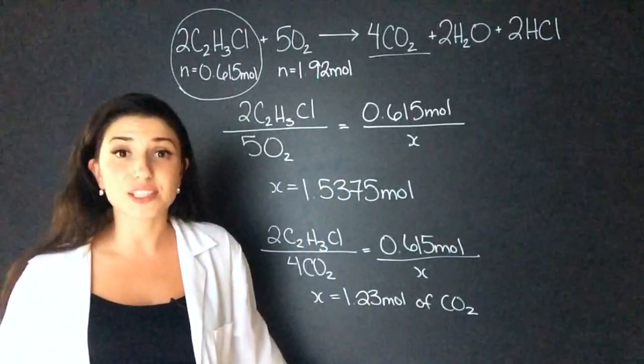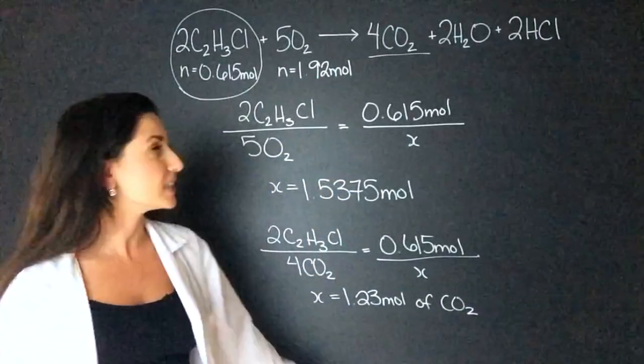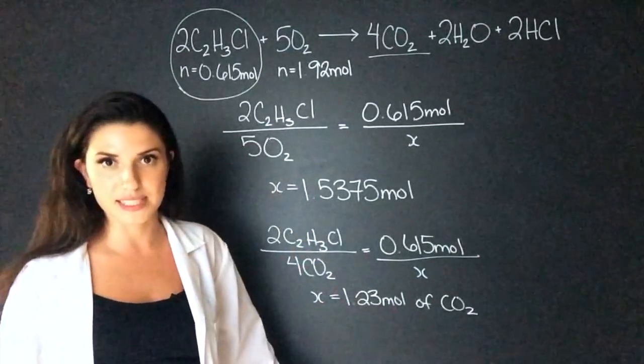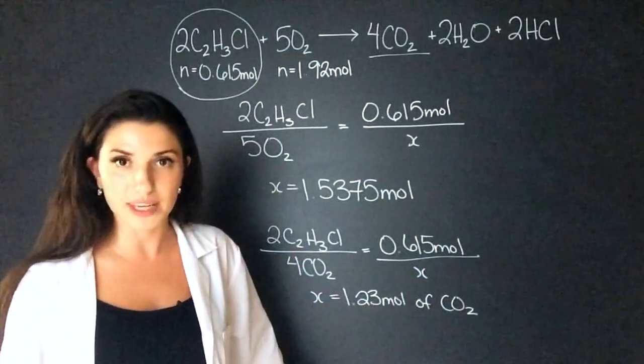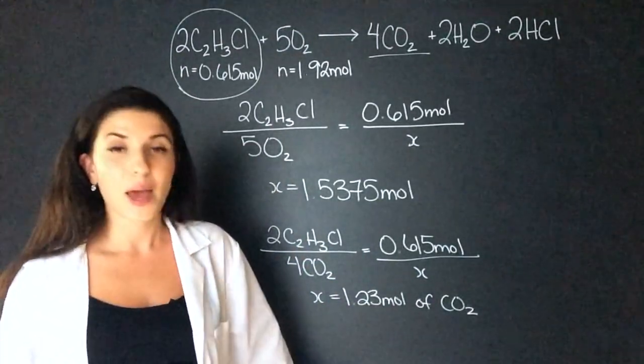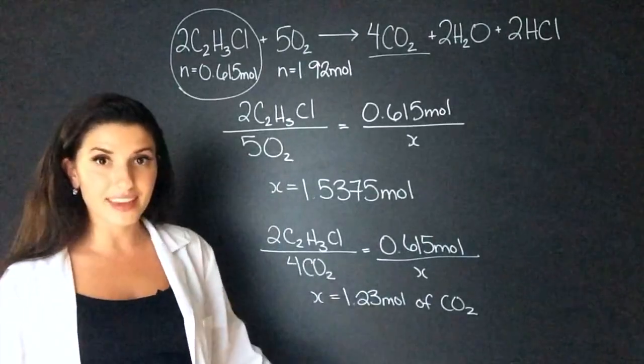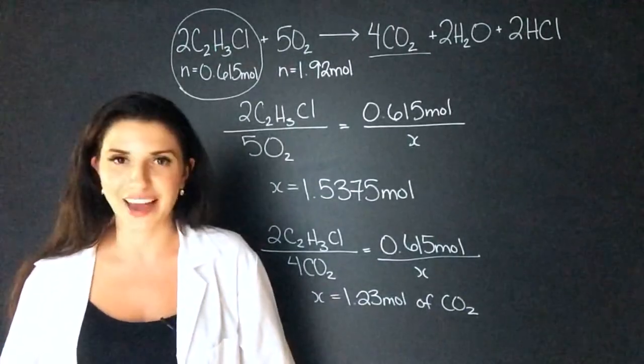Now you can do this for more than one reactant. You would just have to do this step multiple times to decide which one is actually going to be limiting or run out first. But if you don't like this method, I will show you another one right now.